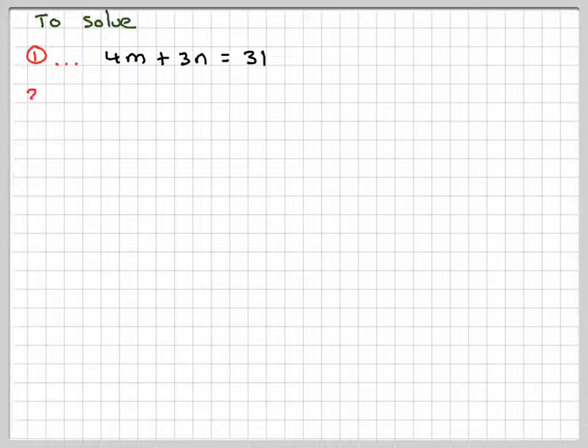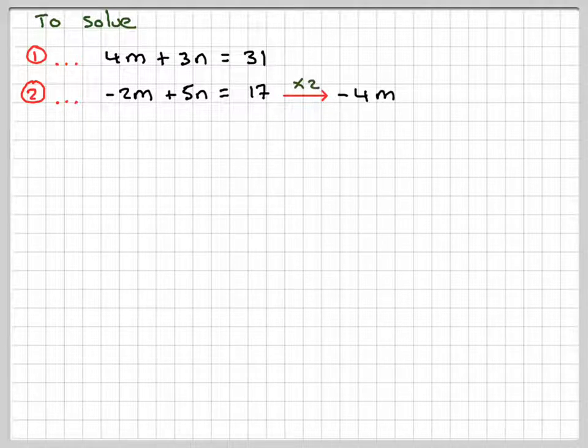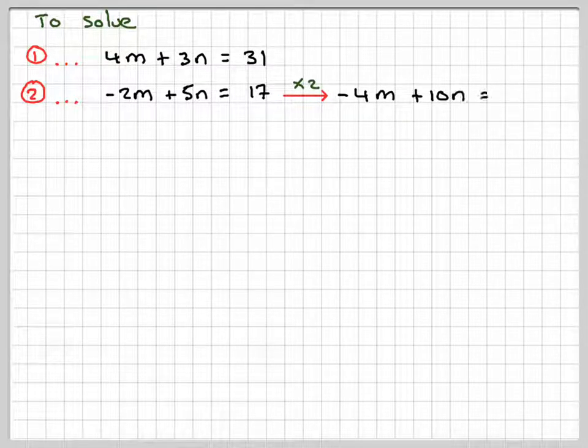So we've got our two simultaneous equations. We need to solve those. So the easiest thing to do is to multiply equation 2 by 2, because that will make that minus 4M. Then we can add the two equations. So we get minus 4M plus 10N equals 34. Don't forget to multiply 17 by 2 as well.